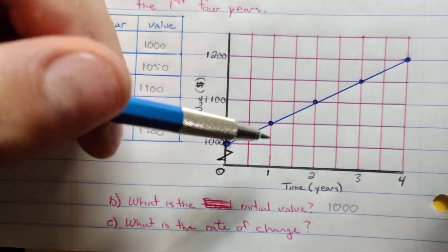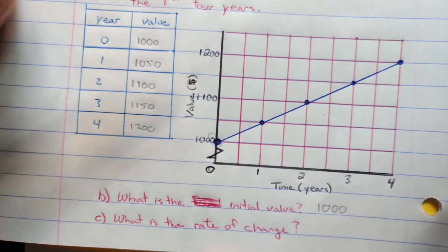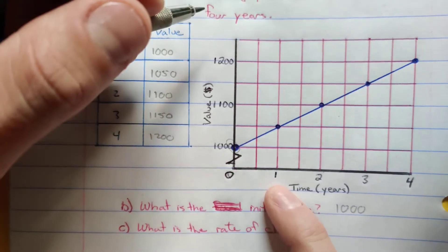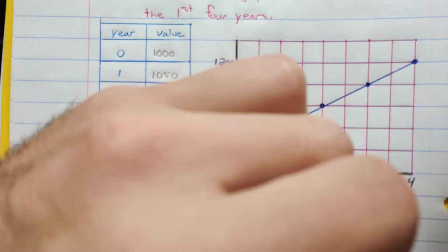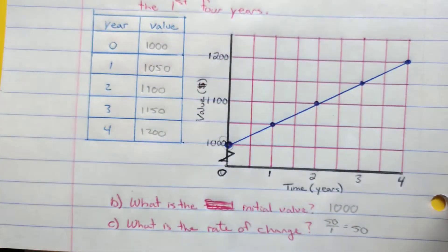And our rate of change, every time it goes up by 1, it goes over by 50. So our rate of change, rise 50, run 1, or just $50. There's our rate of change.